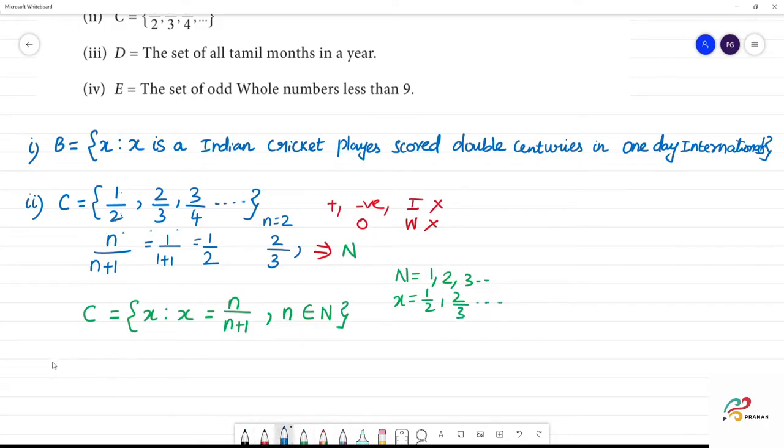Now third one. Third one is the set of all Tamil months in a year. Then it is easy. Then D is equal to x such that x is a Tamil month in a year. That's how we solve it.